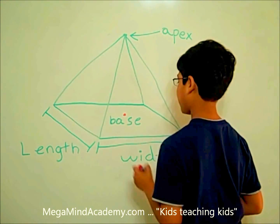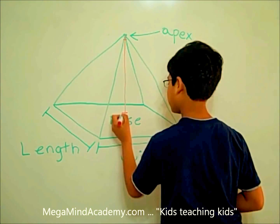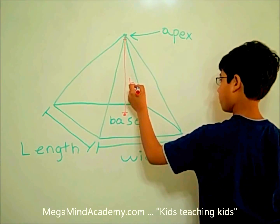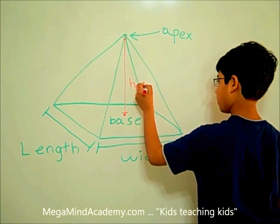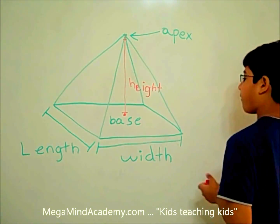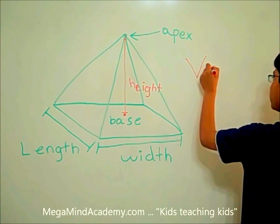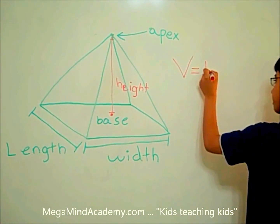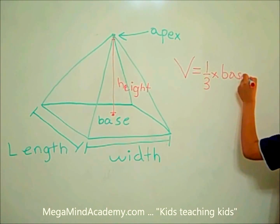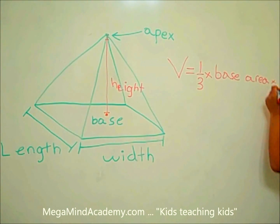Let's assume that this is the center of the base. Then this is the height. Now let's find the volume of the pyramid. V is for volume. V equals one third times base area times height.